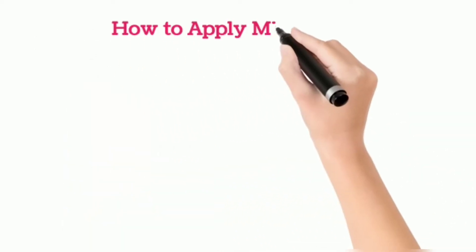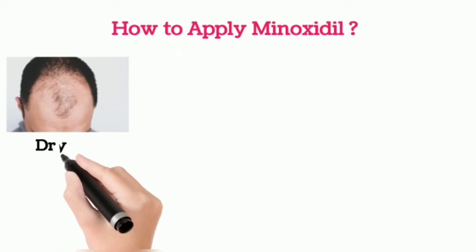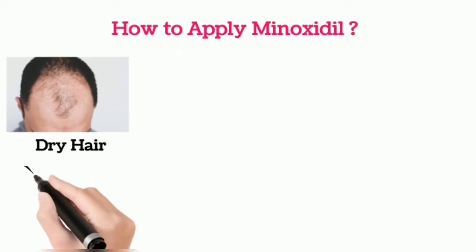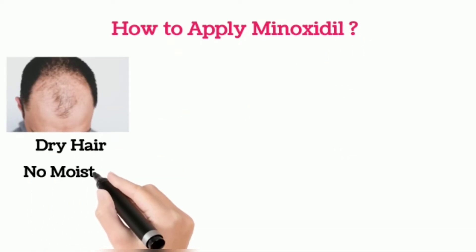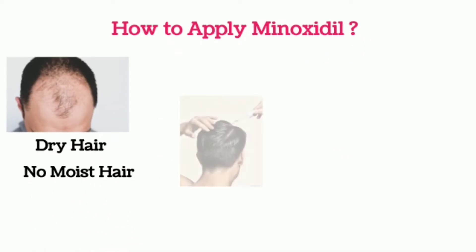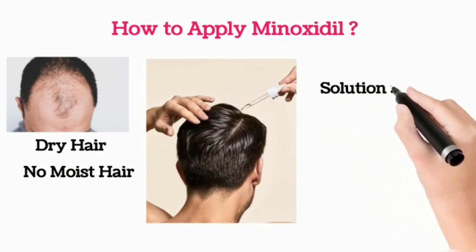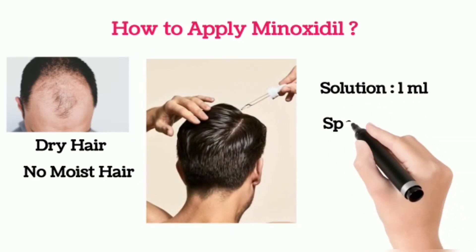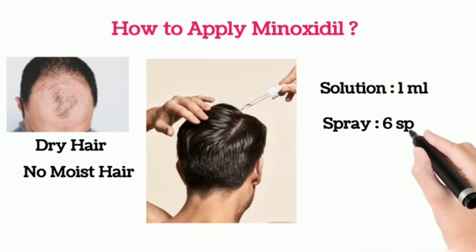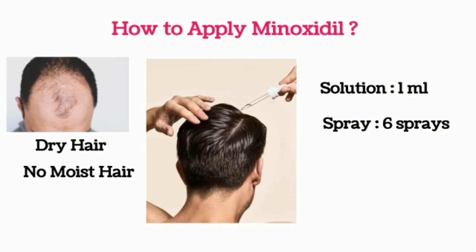How to apply minoxidil? Before applying, hair should be dry. When using solution, 1 ml is applied at the hair loss area. If using spray, 6 sprays should be used, as 6 sprays deliver at least 1 ml of solution.